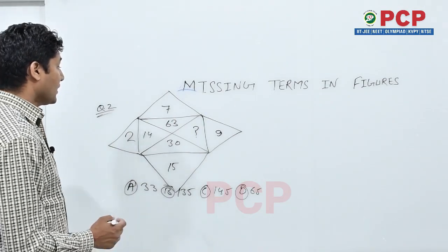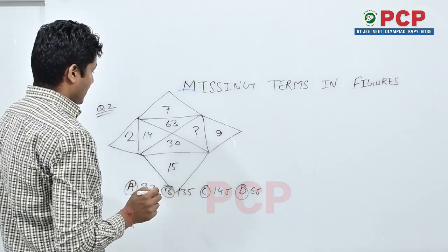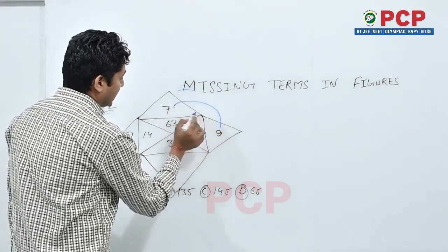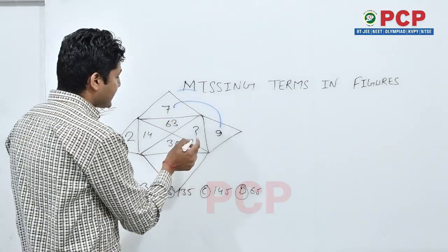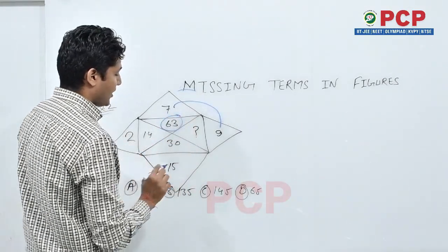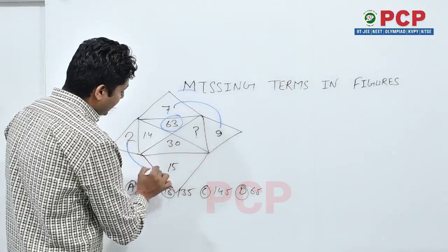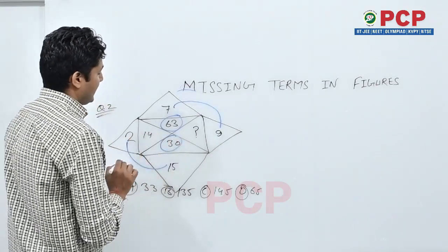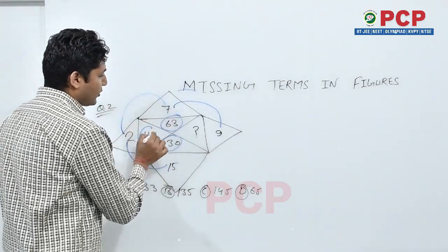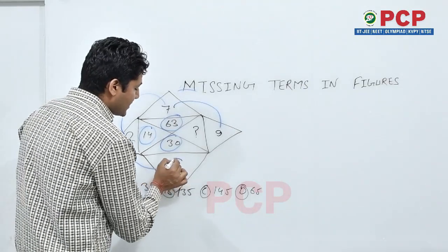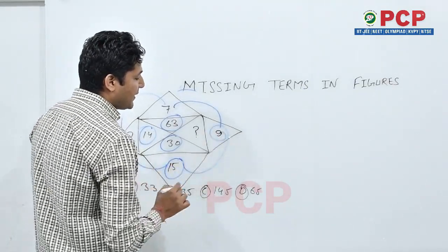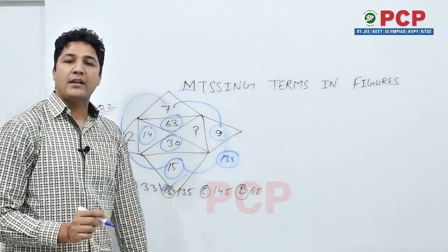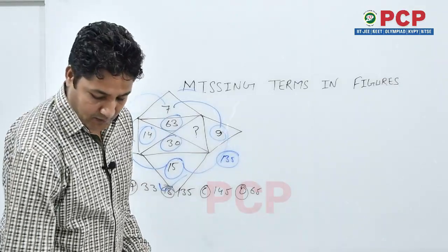In this question 7 into 9 that is 63, 15 into 2 that is 30, 7 into 2 that is 14. Now what will be the answer, 15 into 9 that will be 135 means B is my right answer.